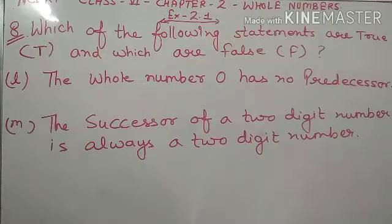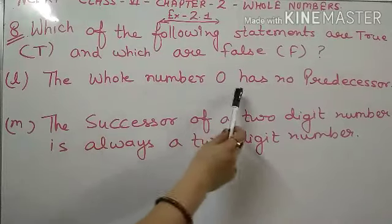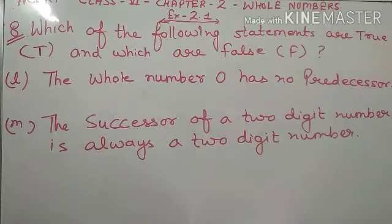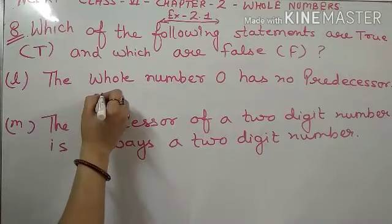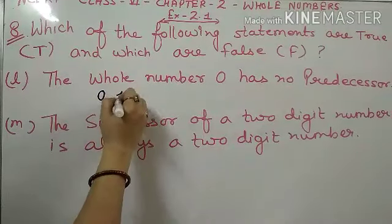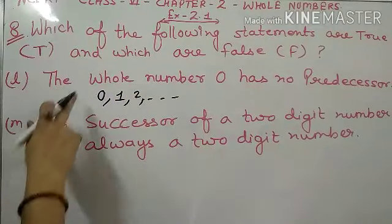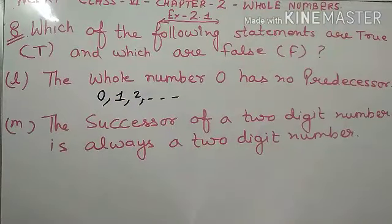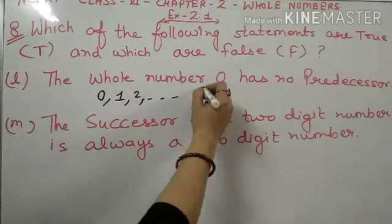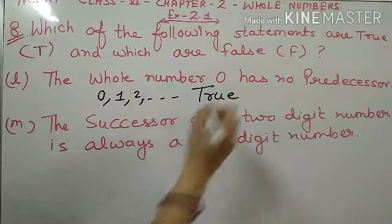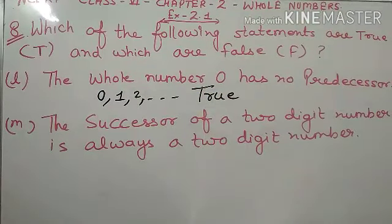Now L part: 'The whole number 0 has no predecessor.' So whole number 0 ka koi predecessor nahi hoota. Bachoh, whole number start hoota hai kisse? 0 se — 0, 1, 2. Ab 0 ka koi predecessor hai yahaan par? Nahi hai. Toh iska matlab yeh statement true huwa. Whole number 0 ka koi predecessor nahi hoota.